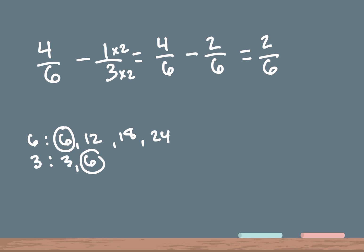Our answer is 2 over 6, but in this case we can actually simplify this number even more. If you take 2 divided by 2 and then 6 divided by 2, that'll give us our simplest form. So 2 divided by 2 is 1 and 6 divided by 2 is 3 — so our answer to the second problem is 1 over 3.